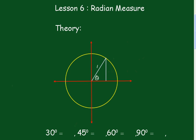Lesson 6, Radian Measure. Now, if we take a unit circle, we know that the circumference of a circle is 2πr.